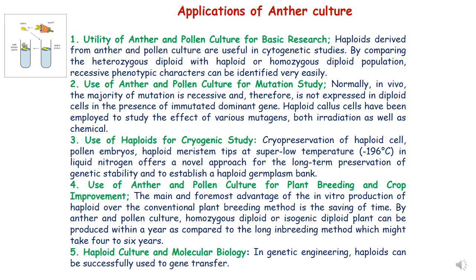The use of anther and pollen culture in plant breeding and crop improvement is a key application. The most important advantage over conventional plant breeding methods is saving of time — homozygous haploid plants can be produced in a very short time, which usually takes very long through conventional breeding. Lastly, haploid culture is very useful in molecular biology and genetic engineering experiments, where they can be used to transfer alien genes of interest.